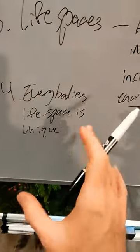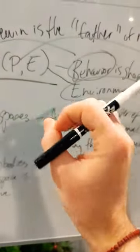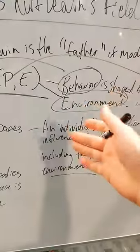As a result, everybody's life space is unique. A life space is basically the lens in which every person views the world. Each person is different.